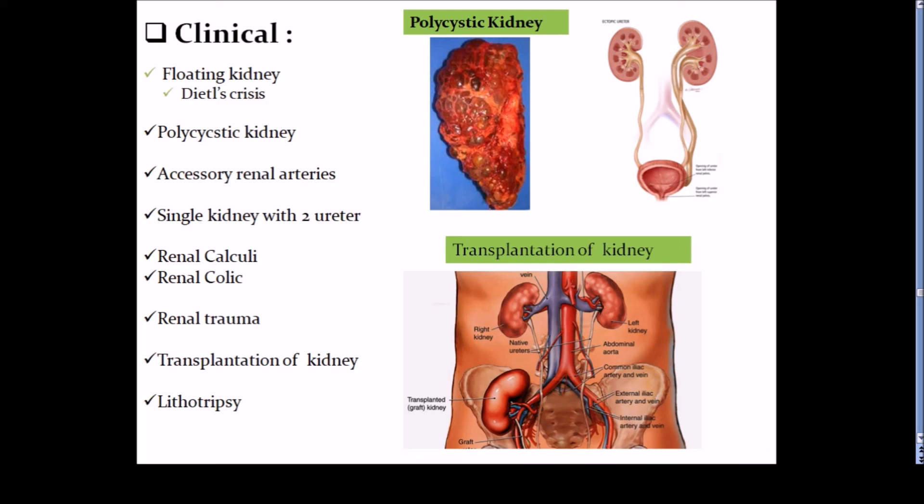Renal trauma: as the kidneys are well protected by the lower ribs and lumbar muscles and vertebral column, but sometimes penetrating injuries like stab injuries, gunshot wounds, or severe blunt injuries may crush the kidneys against the 11th or 12th ribs. Blood from the ruptured kidney or pus in a perirenal abscess first is confined to the renal fascia, then trickles downward within the fascia and may reach up to the pelvis.